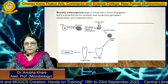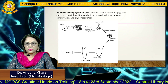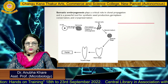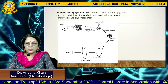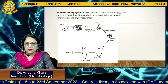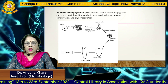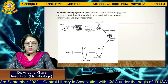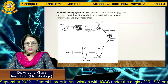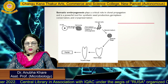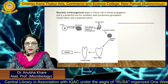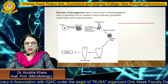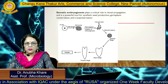Somatic embryogenesis has wide applications in forestry, improvement of plant varieties, and production of plants in different seasons including off-season. Rare varieties of fruits and vegetables can be commercialized through this technique.